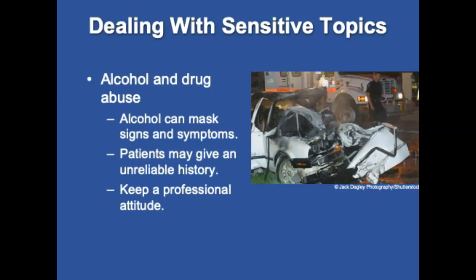When obtaining a history of alcohol and drug abuse, be aware that alcohol is often involved in motor vehicle crashes and can mask signs and symptoms including pain. Be alert for the smell of alcohol on the patient's breath. Patients may give an unreliable history, and the amount of alcohol or drugs consumed is routinely understated. Intoxicated patients can be impatient, aggressive, and non-compliant. Fear of punishment for illegal drug use may lead to denial. Keep a professional attitude and do not judge patients by appearance or attitude.